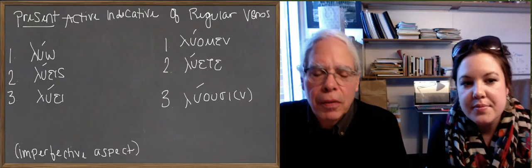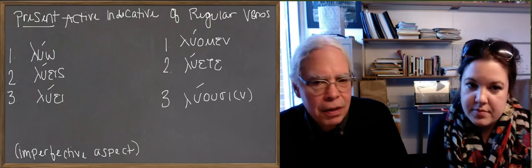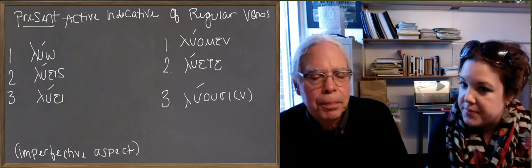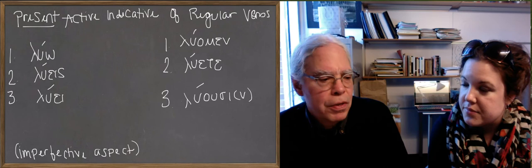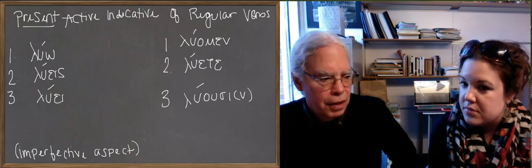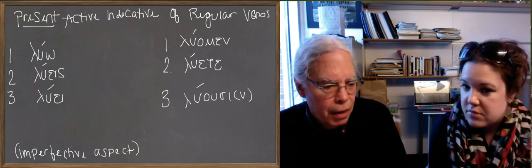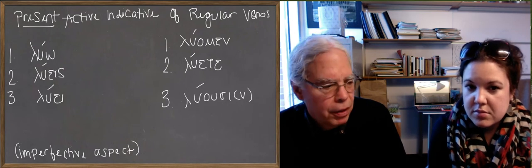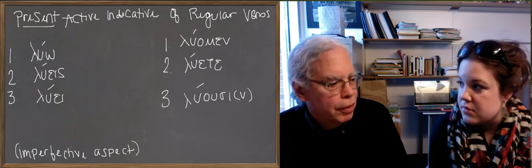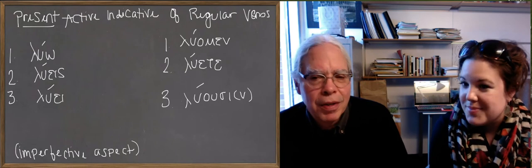This video is about the present active indicative and the imperfect active indicative of the Greek verb. Both of these tenses, present and imperfect, correspond to present tense and past tense, and are forms with the imperfective aspect. So we're talking in both cases about an ongoing process, not a completed one and not one of which we're specifying the completeness of the process.